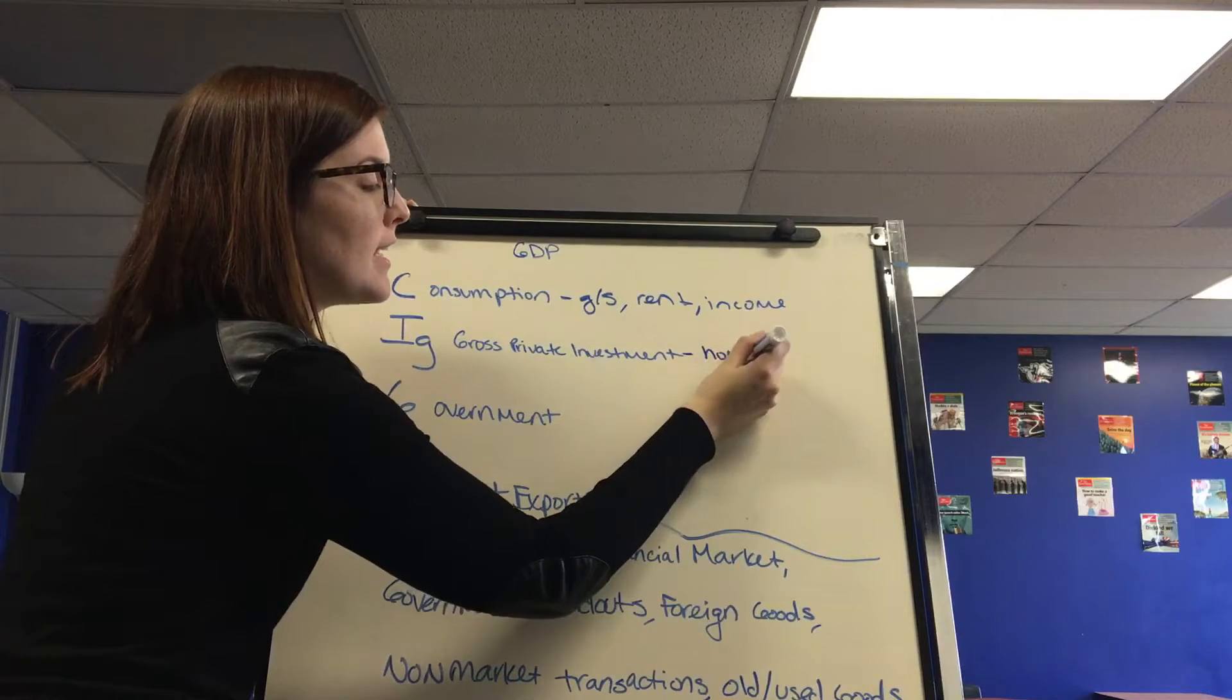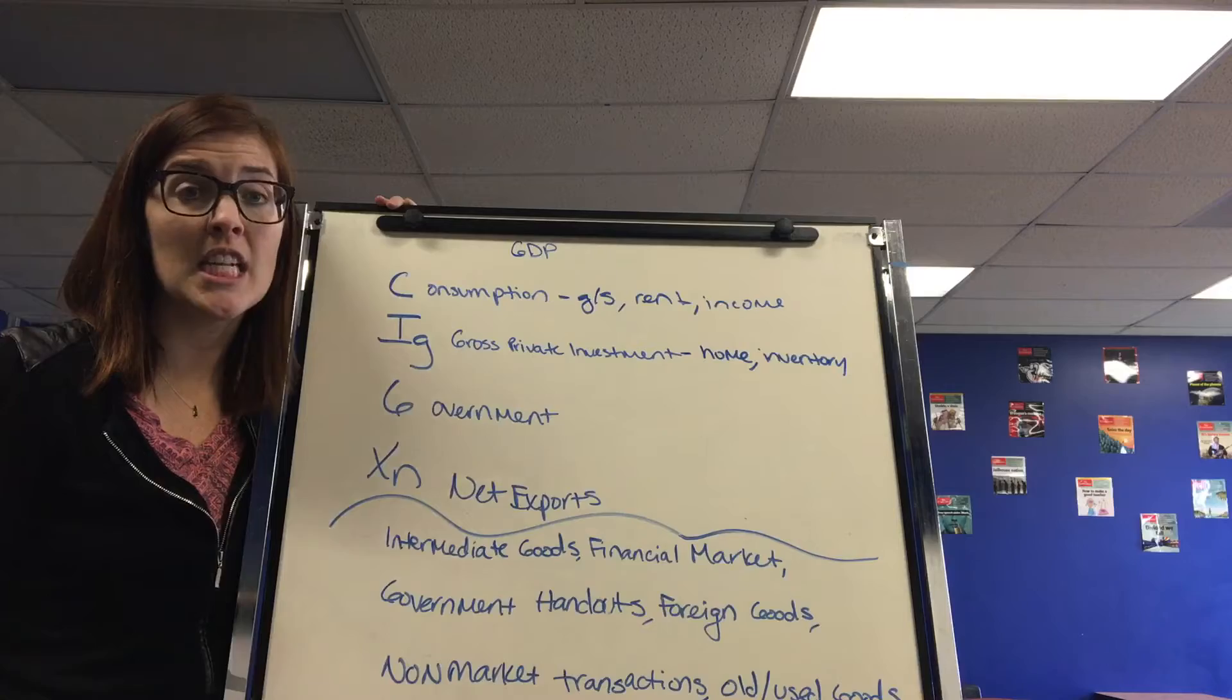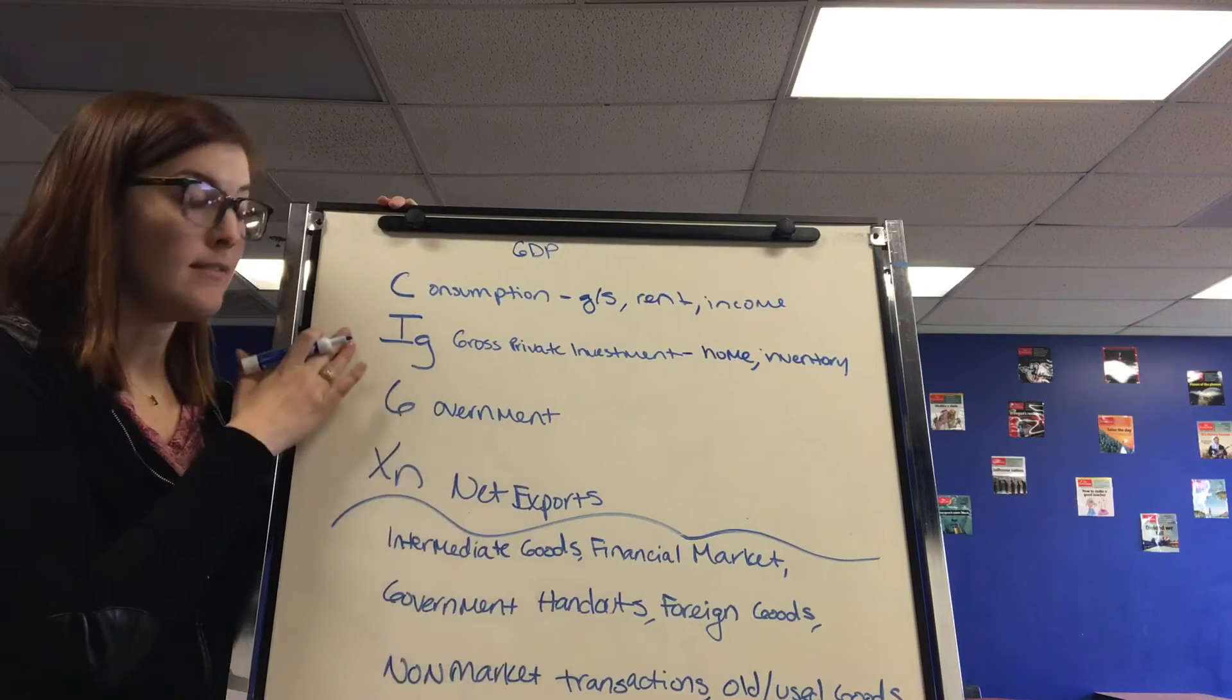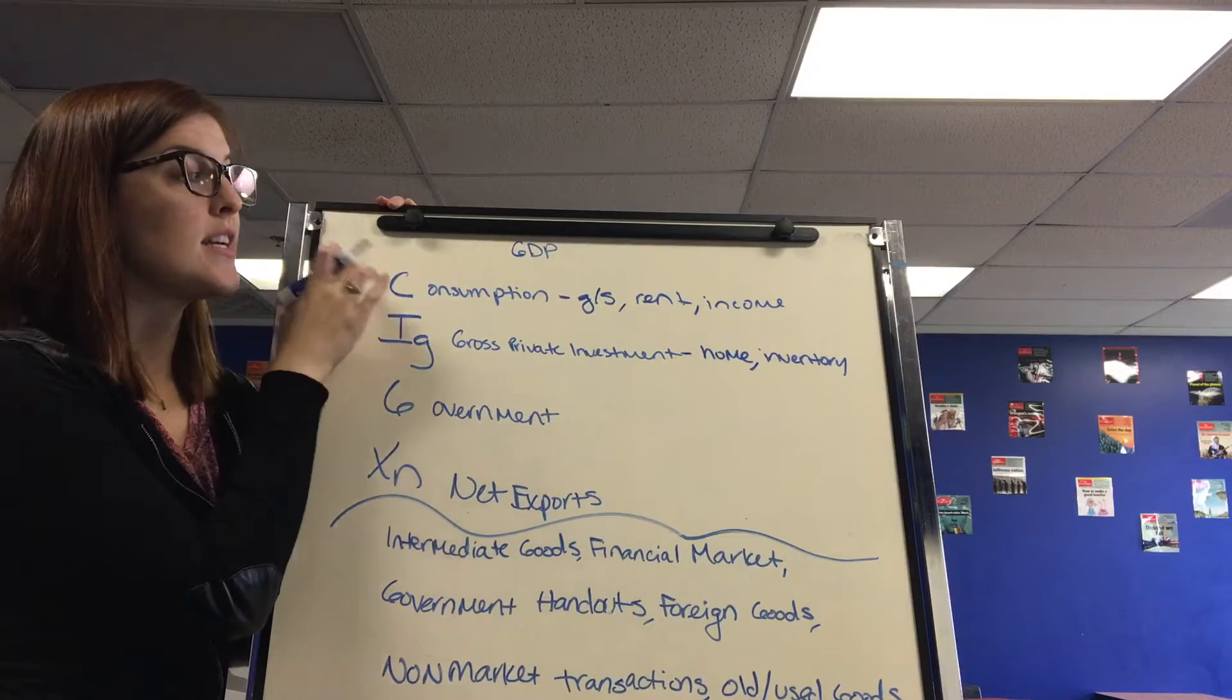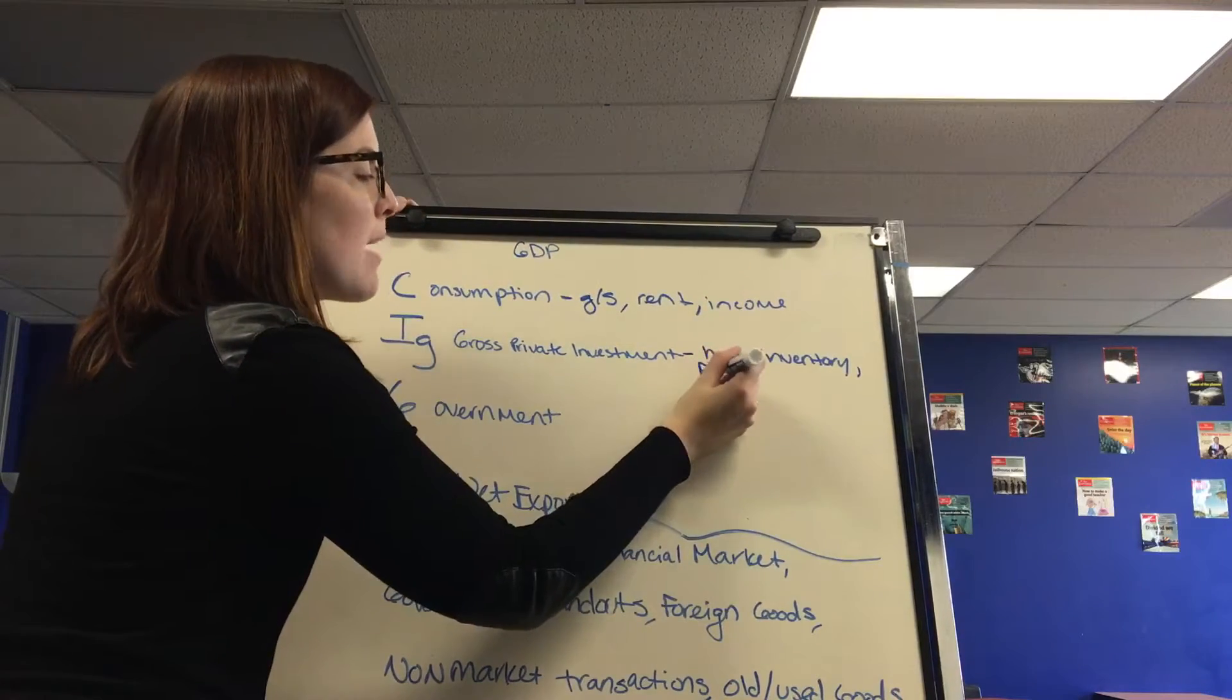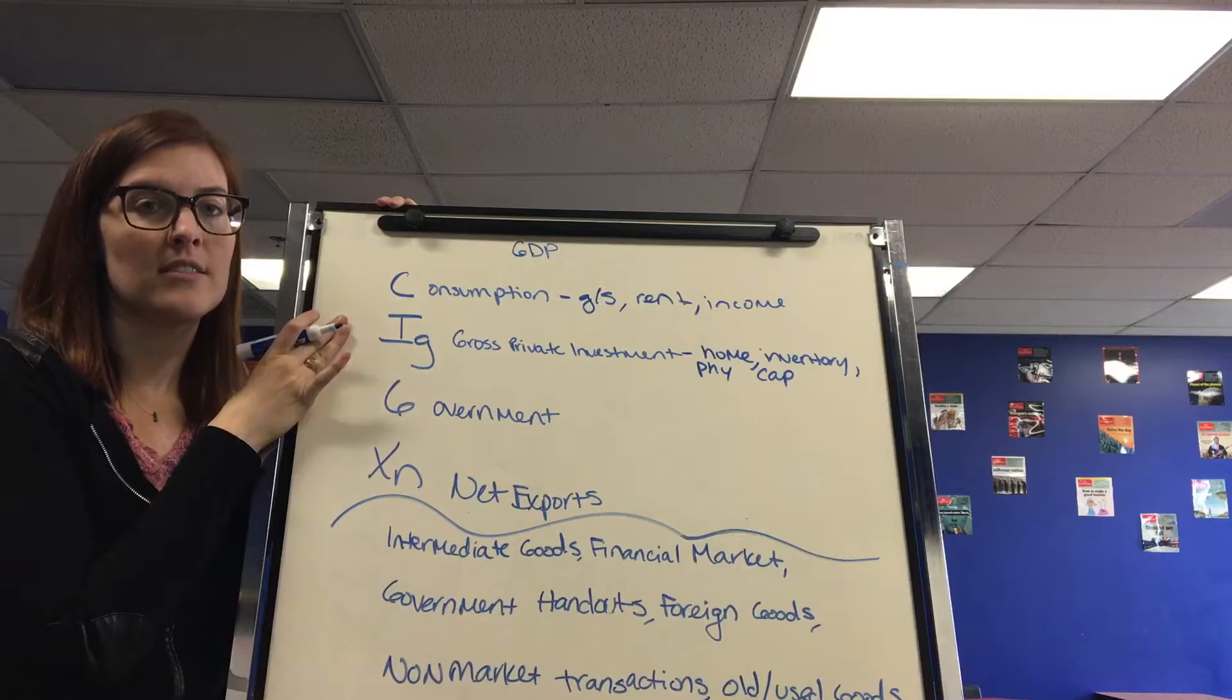There are three things that do count as investment in GDP. A new home produced that year. Inventory, so my iPhone example of the iPhone that is made in 2014 but doesn't sell until 2017, it counted in 2014's GDP as inventory. If the iPhone was produced in 2014 and also sold in 2014, it would count under consumption. And finally, physical capital. New factories or machinery counts as investment.